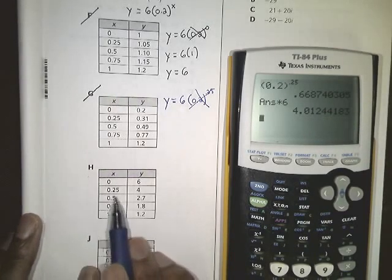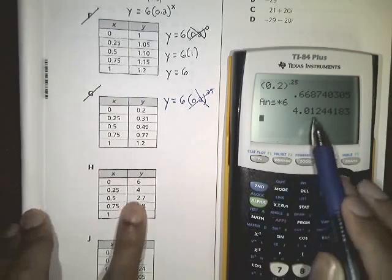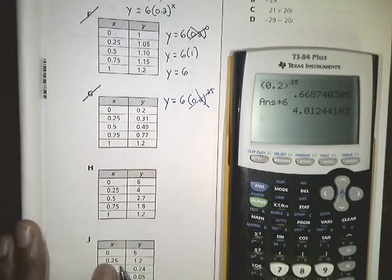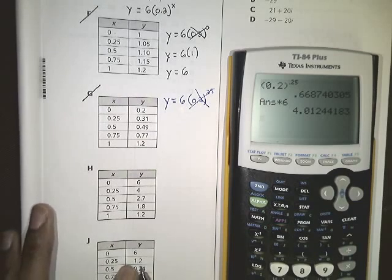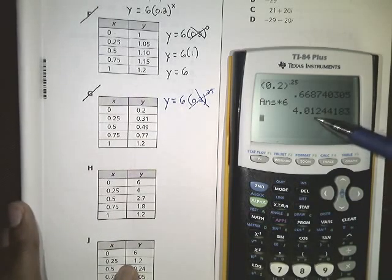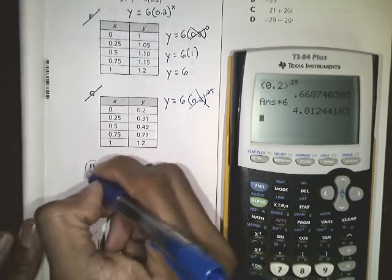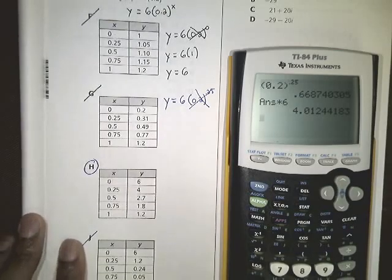Well, choice H, we plugged in 0.25 and we got 4, which is awfully close to 4.01. And then J, when we plugged in a 0.25, we got a 1.2, which isn't entirely close to 4. So J is not going to be the correct answer, so we know that H should be our correct answer for this problem.